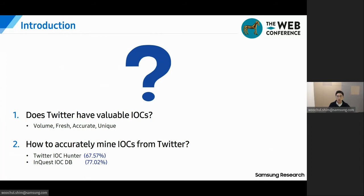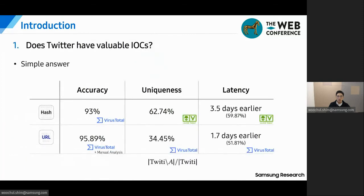Before we jump into the detail, here is a simple and straightforward answer to the first question. In this table, both file hash and URL achieve above 93% accuracy. It means that Twitter can be a reliable threat data source. We use VirusTotal as the ground truth for evaluating accuracy. Uniqueness is the proportion of IOCs only detected by Twitty — Twitty marks 63% exclusiveness for file hashes with respect to AlienVault OTX feeds, and 34% exclusiveness for URL with respect to VirusTotal. Twitty is not a redundant data source, and the latency column shows Twitter has IOCs detected earlier than other threat data sources.